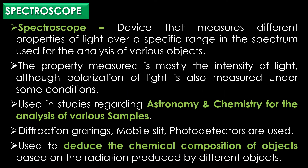A spectroscope, or optical spectrometer, is a device that measures different properties of light over a specific range in the spectrum, used for the analysis of various objects. The property measured is mostly the intensity of light, although polarization of light is also measured under some conditions. Spectroscopes are commonly used in astronomy and chemistry for the analysis of various samples.